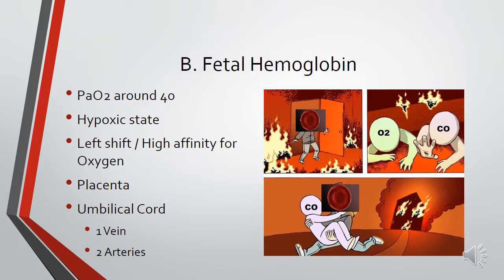Fetal hemoglobin: we know the fetus is going to be a little hypoxic with a PO2 of about 40, but because it's fetal hemoglobin it causes a left shift with a high affinity for oxygen, so the red blood cells are more likely to pick up oxygen instead of carbon dioxide. We have our placenta connected to the baby via the umbilical cord, which has one vein and two arteries. That one vein goes into the baby, and the two arteries return used blood from the baby back into the placenta for oxygen exchange.